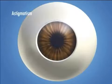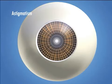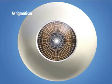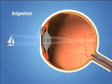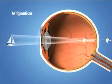Astigmatism is a condition in which the cornea is curved unevenly. A cornea that is curved the same in each direction is shaped like a basketball, while a cornea with astigmatism is more curved in one direction than the other, like a football. Light passing through this uneven cornea is not properly focused on the retina.